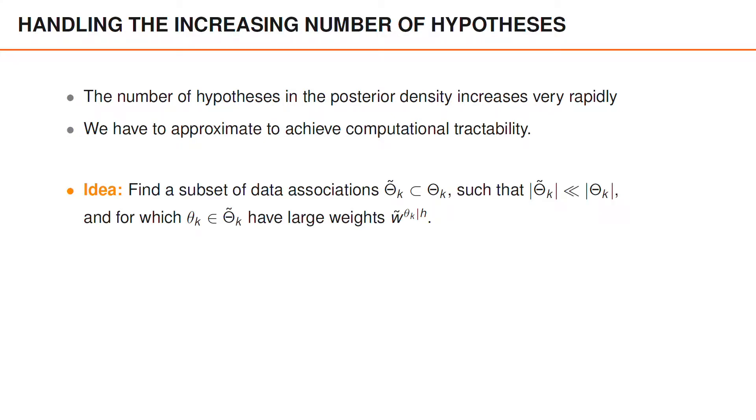One idea is that we try to find a subset of data associations, call it capital theta tilde, such that this subset contains a lot fewer data associations, and such that each association in this subset has a large weight.